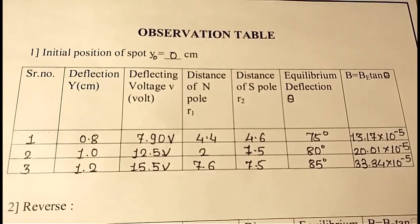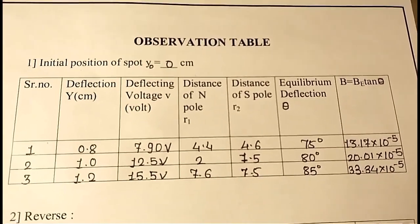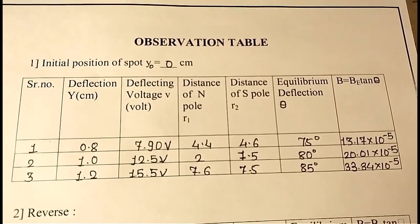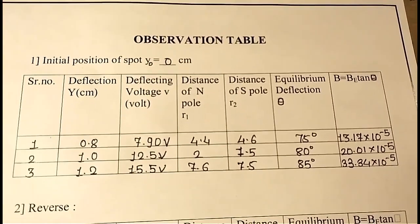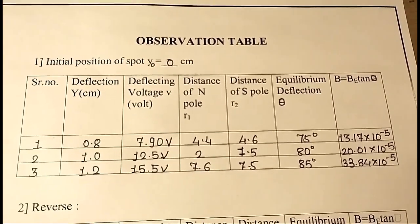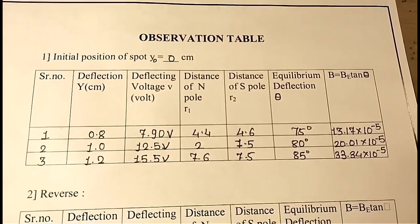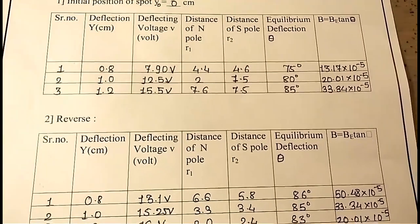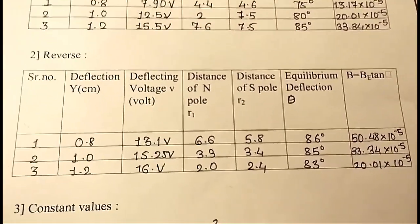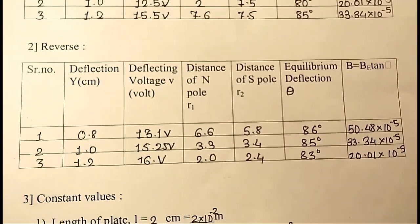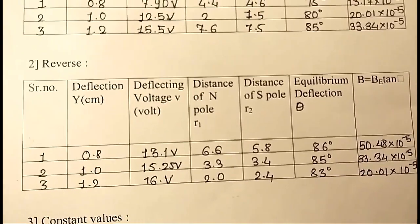Now, here we take three different observations for three different deflections, that is for Y corresponding to 0.8 cm, 1.0 cm, and 1.2 cm, with deflecting voltage 7.9 volts, 12.5 volts, and 15.5 volts respectively.